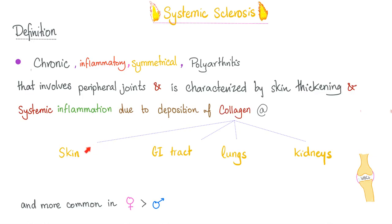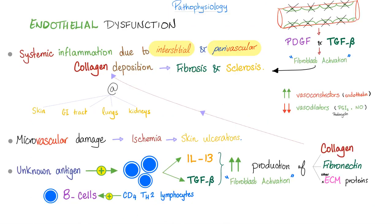Collagen is everywhere — collagen deposition in the skin, GI tract, lungs, heart, kidneys, etc. It is more common in females than males, like most autoimmune diseases. Diseases of immunodeficiency are more common in men, while diseases of autoimmunity are more common in women.